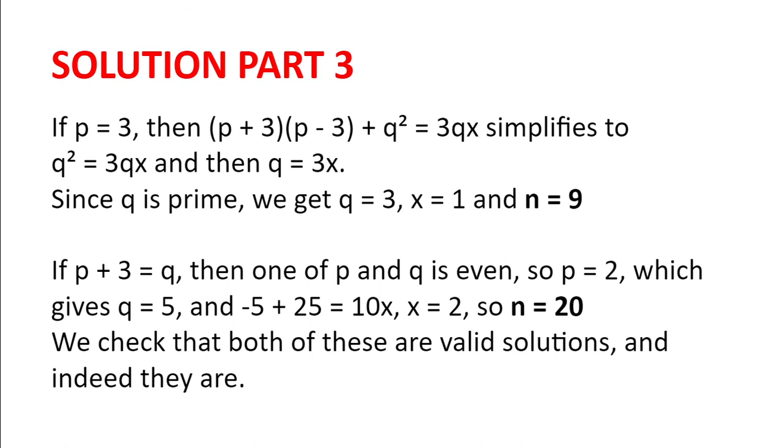Now, looking when p plus 3 is q, we find 1 of p in q is even. And so p equals 2, which gives q equals 5, because 2 is the only even prime. We then get minus 5 plus 25 equals 10x. x equals 2. And so n is 2 multiplied by 2 multiplied by 5, which is 20.